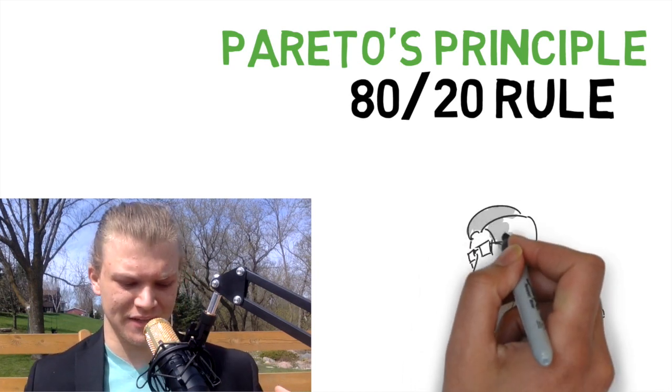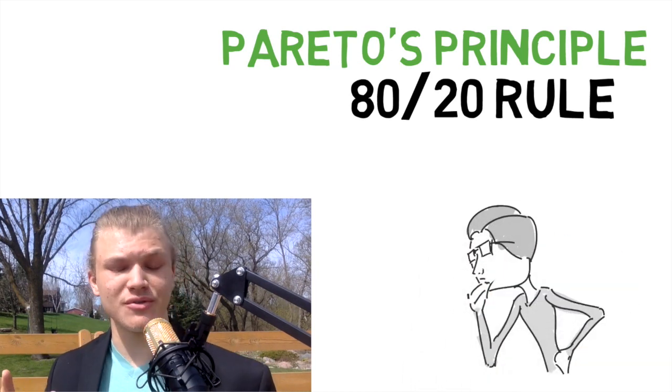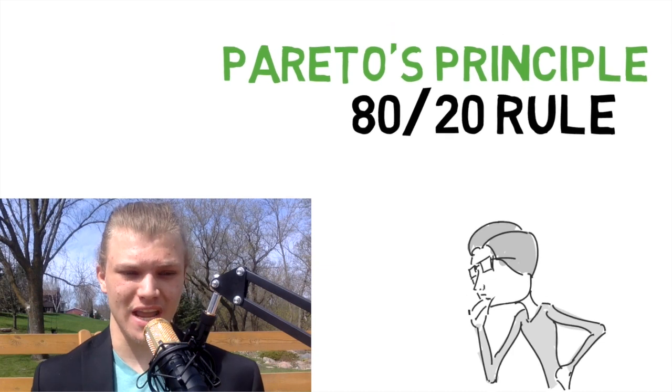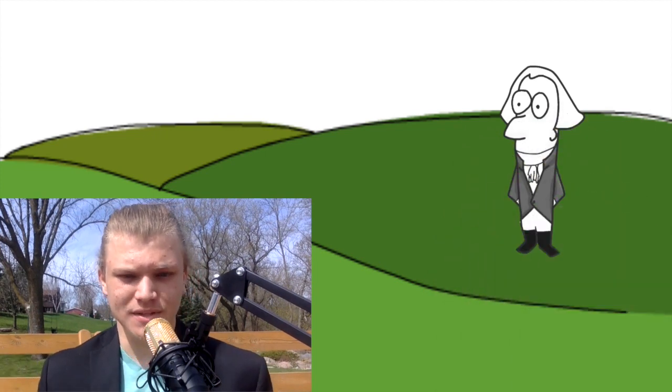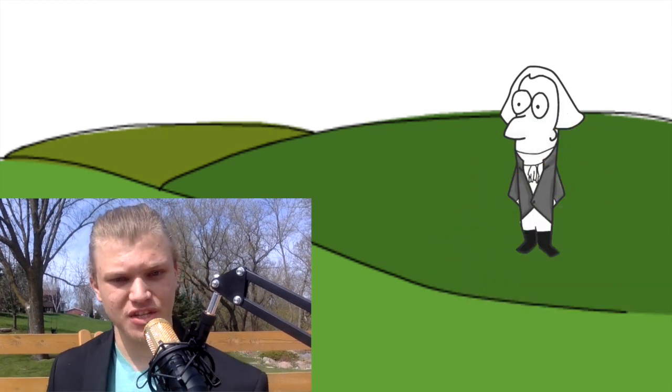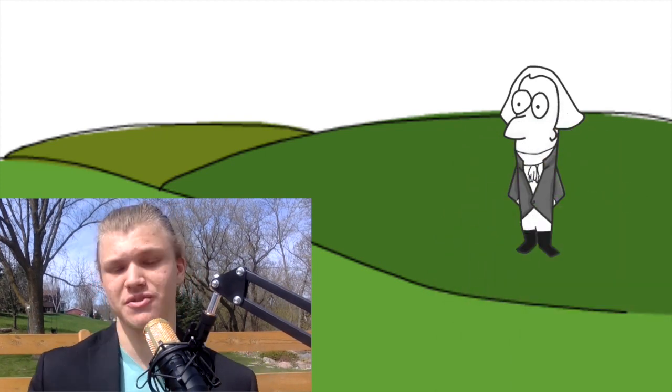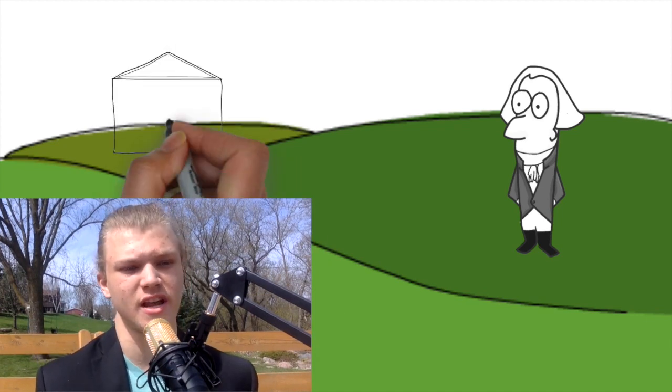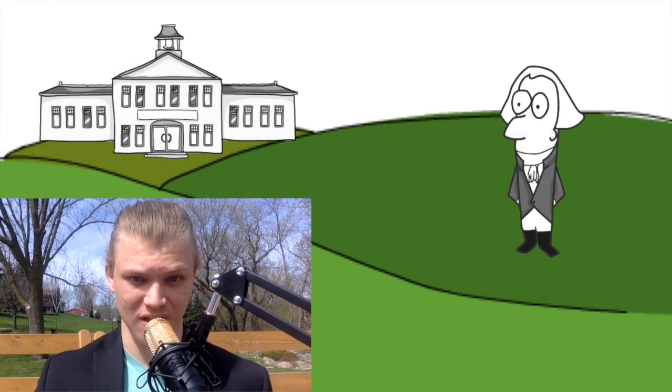It was originally founded and named by a man named Joseph Juran, who named it after an Italian economist named Vilfredo Pareto. He was actually in university in the 1800s and he wrote a paper, his very first paper in university was called Cours d'Economie Politique.